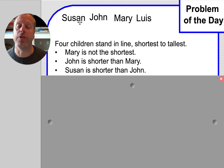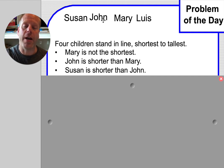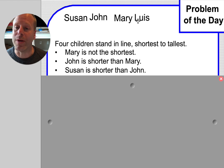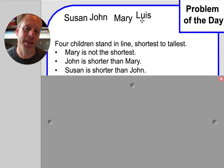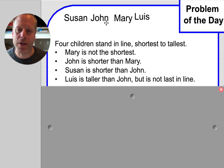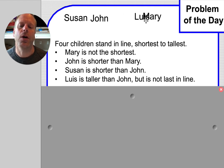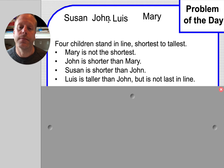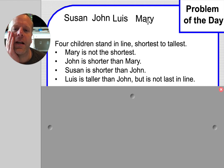Susan is shorter than John. So now we have Susan on this side of John, and we have John on this side of Mary. But we don't know where Louis is — Louis could be short, he could be tall, he could be shortest, he could be tallest. Louis is taller than John, but is not last in line.